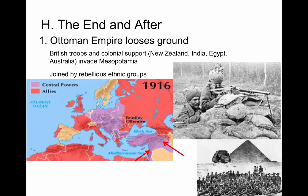The Ottoman Empire was being attacked from without while already weakening internally. Many ethnic groups within the Ottoman Empire were inspired by Wilson's 14 Points, believing that an Allied victory would break up the empire and allow Egyptians to control Egypt, Jordanians to control Jordan, and so forth. They hoped that ethnic self-determination would finally arrive and that empire as a system would come to an end.